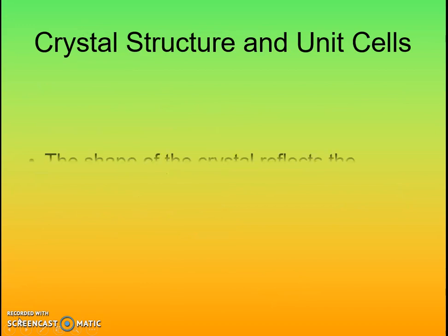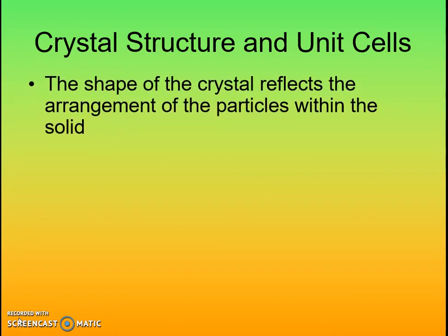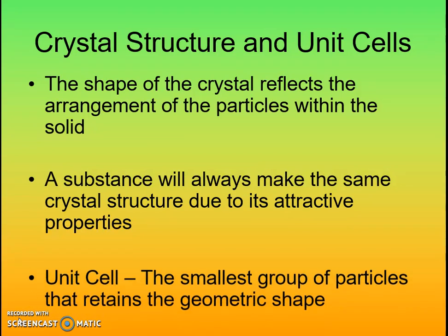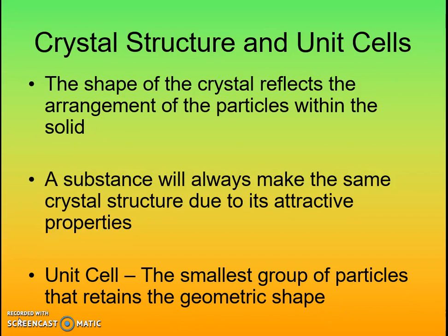The crystals we see when particles come together are actually a reflection of how the atoms, ions, and molecules are getting together on the smallest level. That smallest unit of how they come together just keeps building the same three-dimensional pattern, giving us one large crystal that looks like the small unit cell that makes it up. Because of what that substance is, it has a predictable pattern — we know how those particles are going to come together based on how those molecules, ions, and atoms are attracted to each other. They build together in that unit cell, the smallest group of particles retaining that geometric shape.